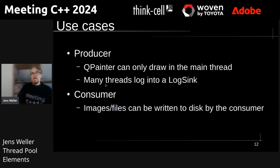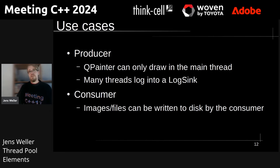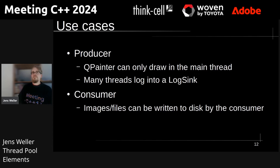There are generally a few use-case examples for this. I've mentioned the logging thread, which is a classic. A Qt Painter can only draw in one main thread, so that's usually the main thread. When you have some functionality where you draw multiple images, unfortunately this has to block the main thread. But you can then send the image to the thread pool or to the consumer in this case and write those image files in a different thread.